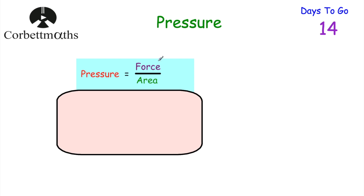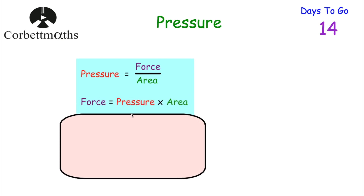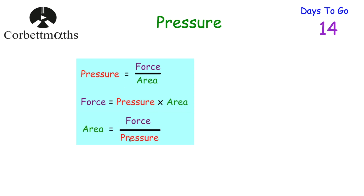Now let's look at another compound measure: pressure. Whenever a force is applied over a particular area, pressure equals force divided by area. Rearranging: force equals pressure multiplied by area, and area equals force divided by pressure. So dividing force by area gives pressure; multiplying pressure by area gives force; and dividing force by pressure gives the area.